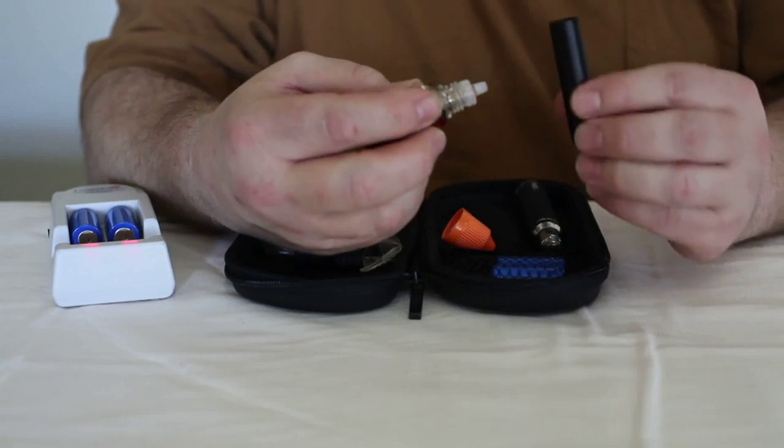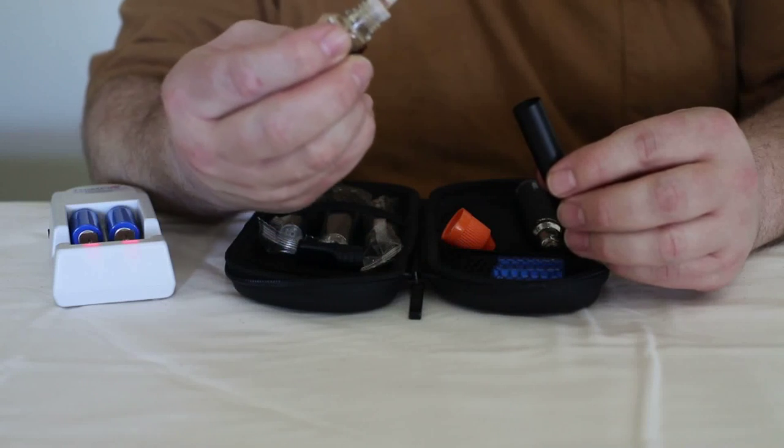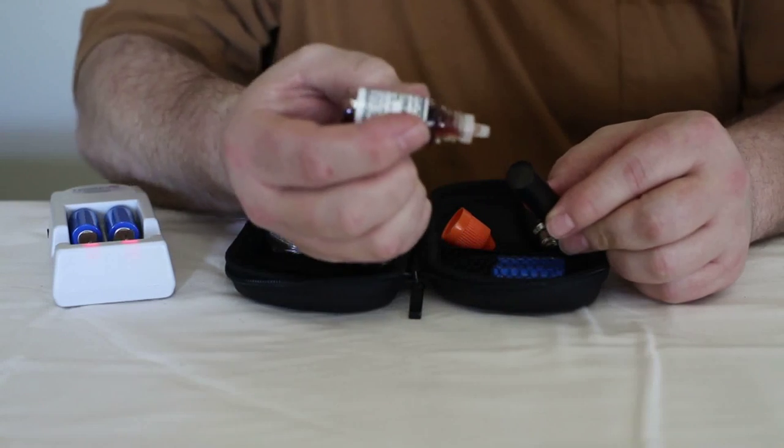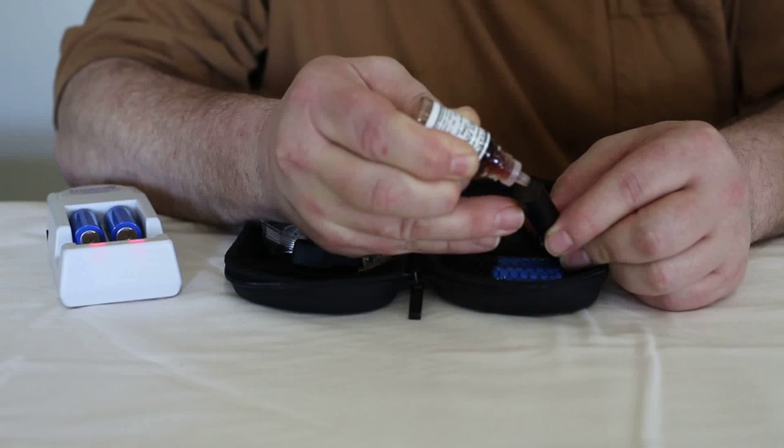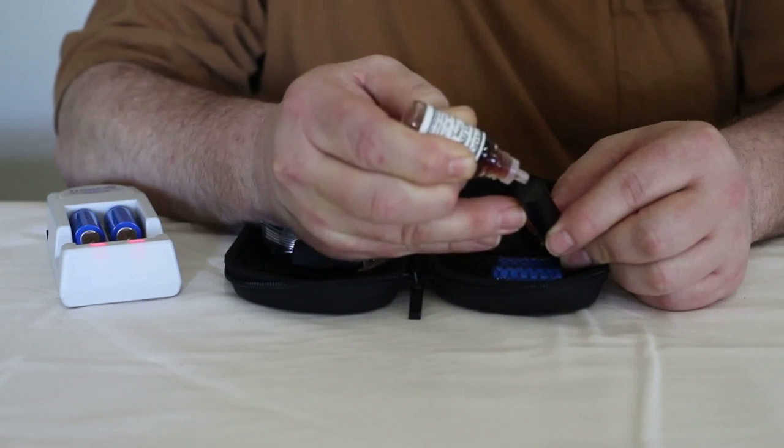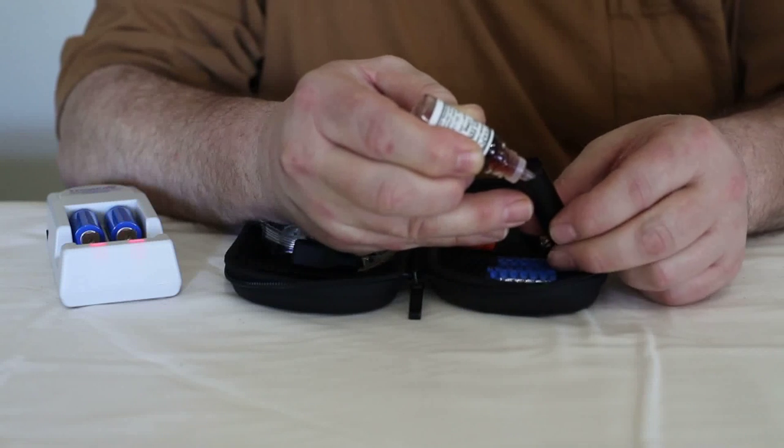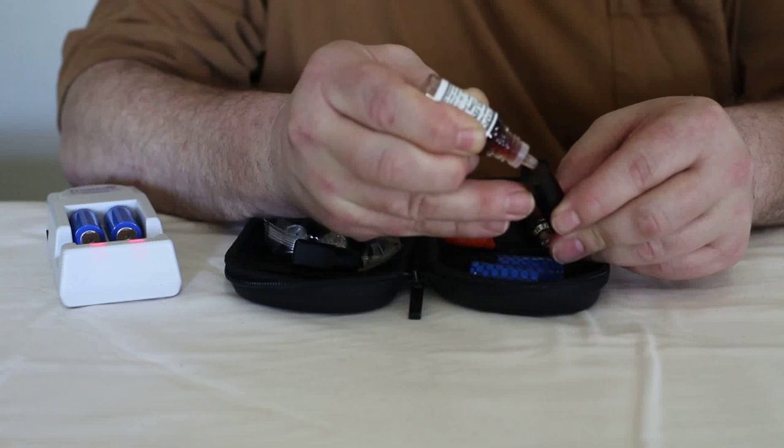These hold about five milliliters, which is approximately 150 drops. Now you're going to place about 10 drops inside. Wait a second for it to absorb. Rotate it a quarter turn. Another 10 drops.